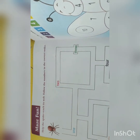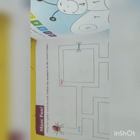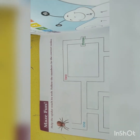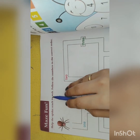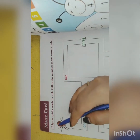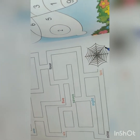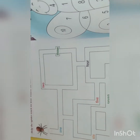So today, open your book from page number 24. Today we will do the maze fun. It is written: help the spider reach its web. What do we need to do? This spider — we will help this spider. This is a web.